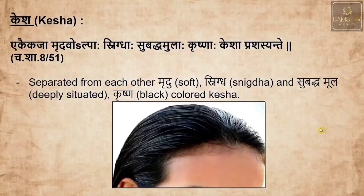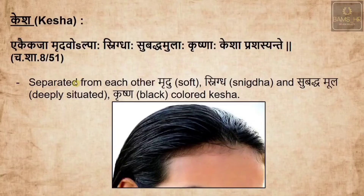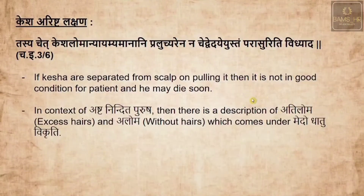Kesha — the qualities of good kesha: ekaja (one strand separated from each other), mrdhwa (soft), alpaha, snigdha, subhadda mulaha (deeply situated roots), krishna (black color). These are the qualities of good kesha.